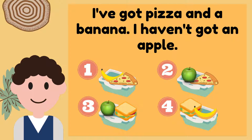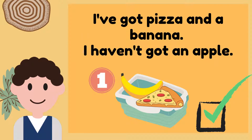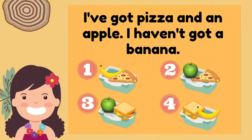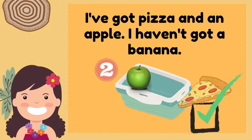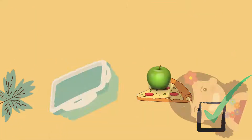I've got a sandwich and a banana. I haven't got a banana. I haven't got an apple. I've got pizza and an apple. I haven't got a banana. Is it number two? Yes, correct. It's lunchbox number two.